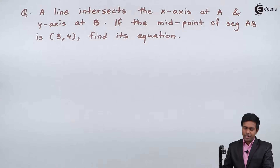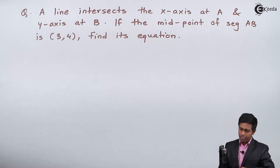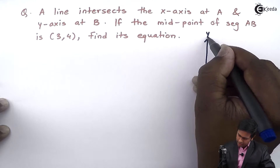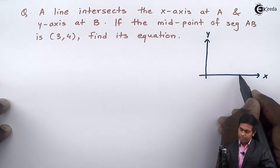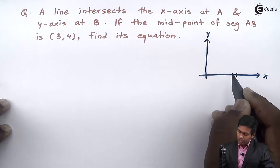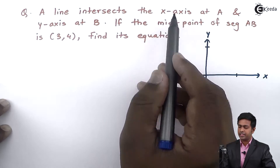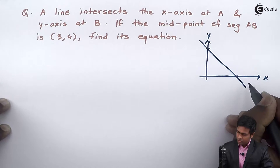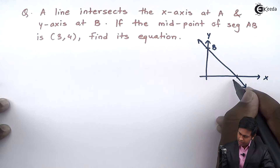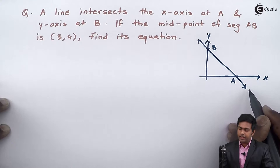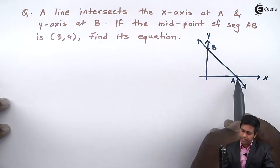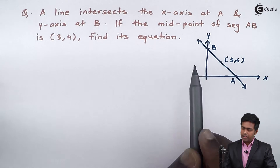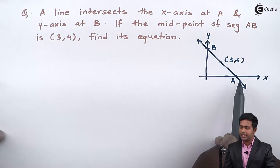Before starting with the solution, let's visualize the given problem. I will draw the y-axis and x-axis. This is point A on the x-axis and this is point B on the y-axis, so the line passes through both. The midpoint of segment AB is (3, 4), so this is the given condition and we have to find out the equation of line AB.